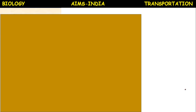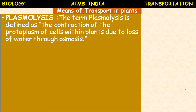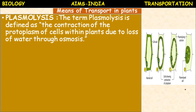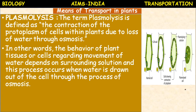Plasmolysis: it is the shrinkage of protoplasts of a cell from its cell wall under the influence of a hypertonic solution. The term plasmolysis is defined as the contraction of the protoplasm of the cell within plants due to loss of water through osmosis.